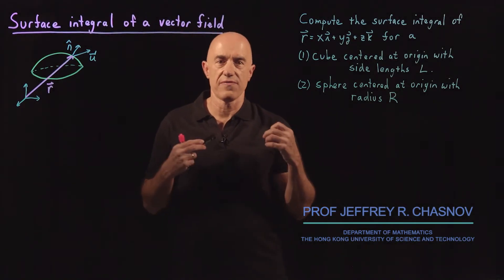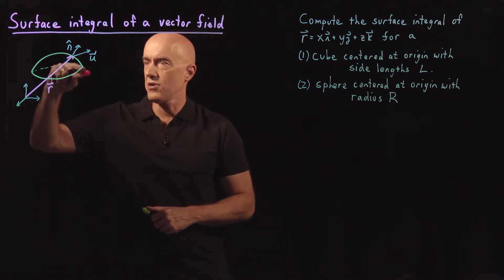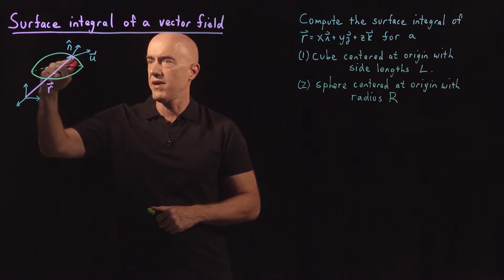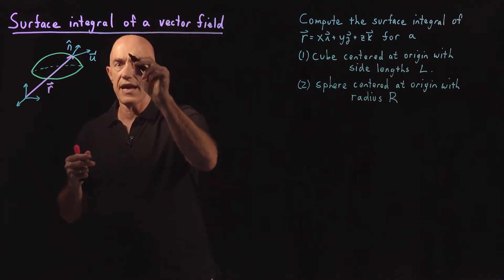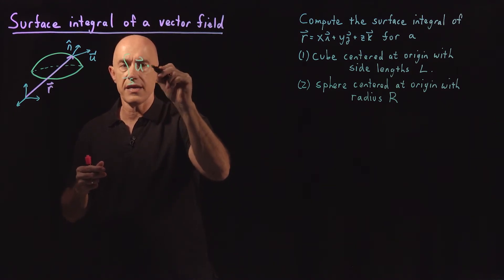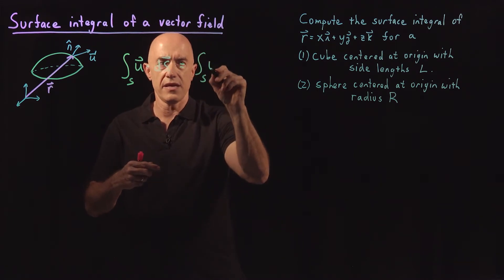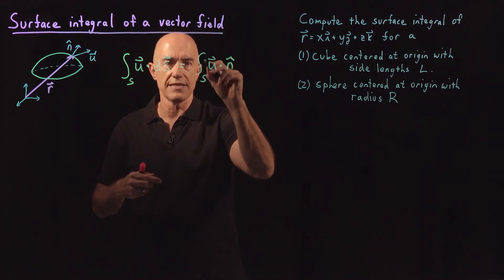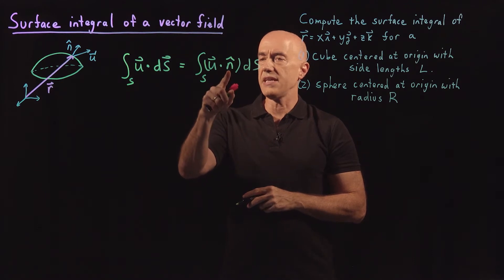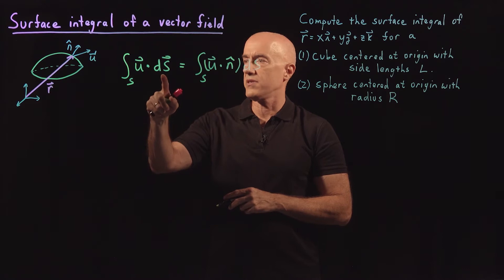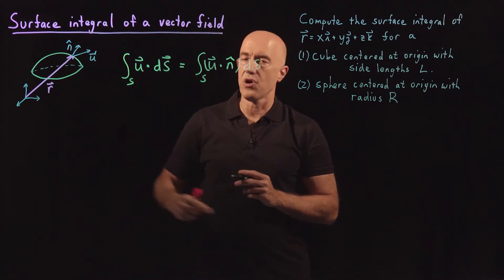We've already talked about the surface integral of a scalar field. In this video, I want to define the surface integral of a vector field. So let's say that this is our surface and we have a vector field u defined on the surface. The surface integral of the vector field we'll define as the integral over the surface of u dotted into a vector ds, where the vector ds is just the normal vector to the surface, which I'll denote as n-hat times the scalar ds that we've seen already for the surface integral of a scalar field. The key here is that to define the surface integral of a vector field, we take the dot product of the vector field with the normal unit vector to the surface, n-hat.